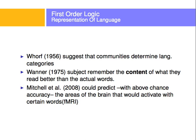Also, from 1956, we know those abstractions may vary depending on cultural factors or individuals. And in 2008, people at Carnegie Mellon were able to predict with above-chance accuracy the areas of the brain that would activate with certain words. Perhaps the activation of those areas is how we represent language. But the one common thing is that the representation of language is abstract — it's not literal.